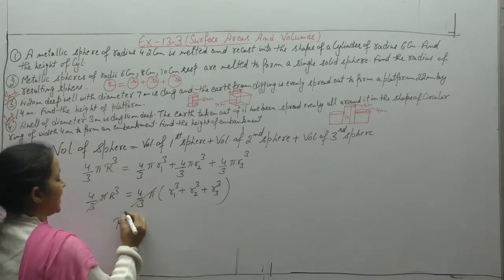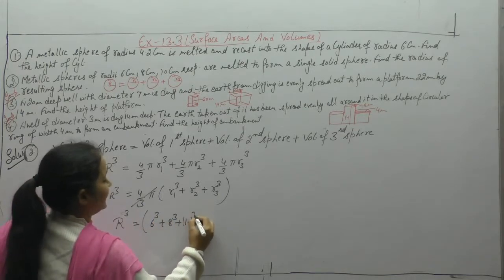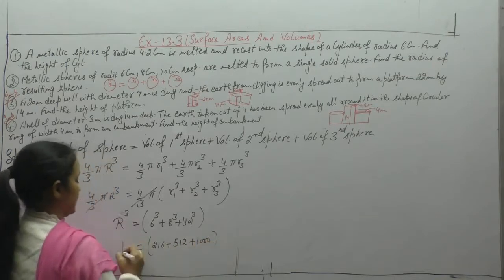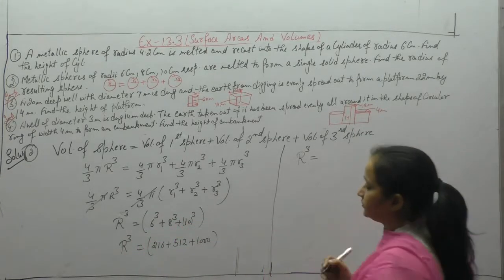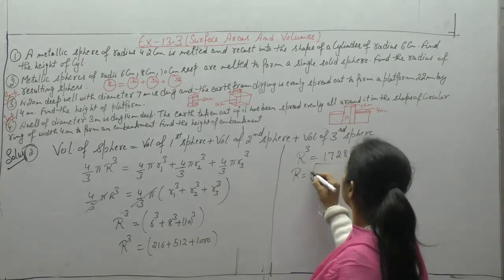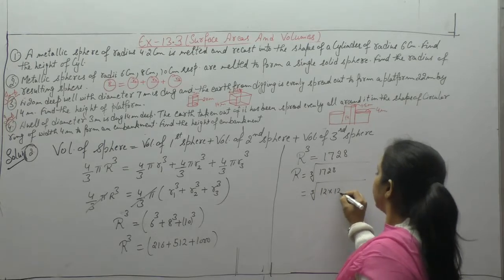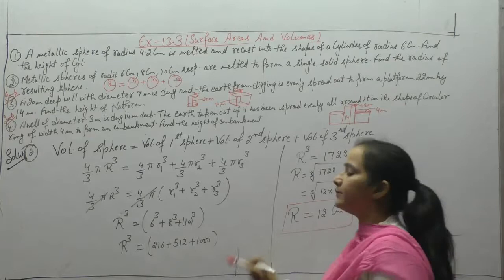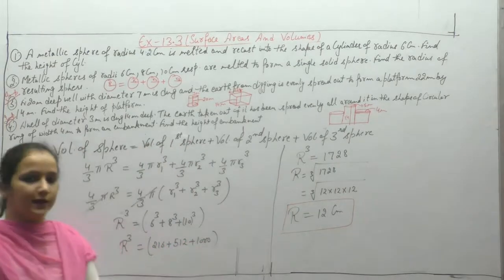So R³ = r₁³ + r₂³ + r₃³, where r₁ = 6, r₂ = 8, r₃ = 10. So R³ = 6³ + 8³ + 10³ = 216 + 512 + 1000 = 1728. Therefore R = cube root of 1728 = 12. So radius is 12 cm. You should know squares and cubes of numbers up to 20.